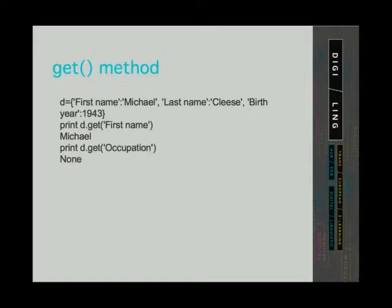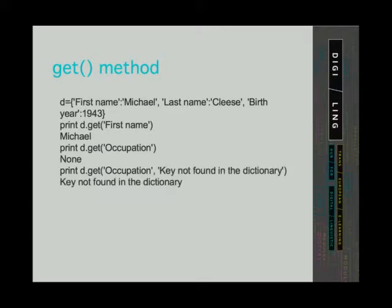However, if we ask for a value of a key not found in the dictionary — for example, key is occupation — the program doesn't return an error but the value None. We can also ask for a value of the same key occupation, but this time we define the default value as 'key not found in the dictionary'. The program will return the defined default value.